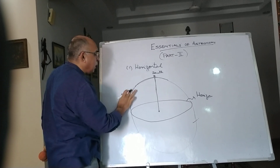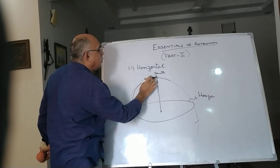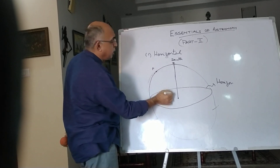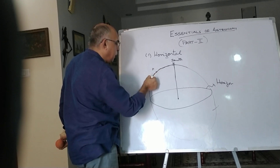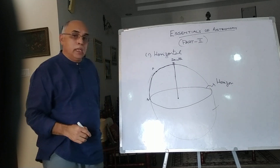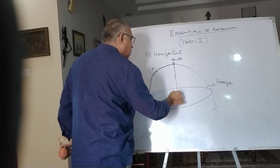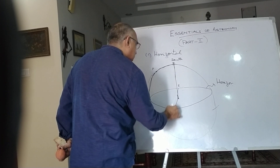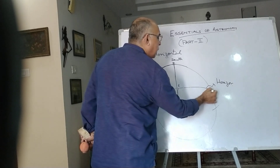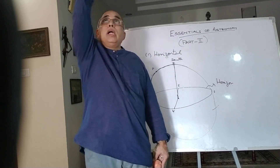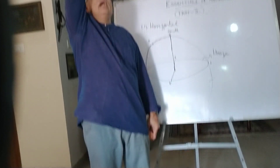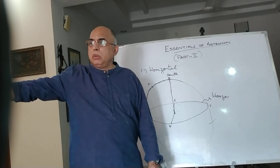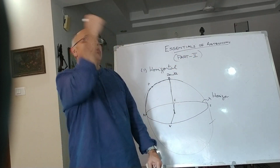The second important point we require is the pole star P. Depending on what location you are at, you draw a great circle going through the zenith Z and the pole star P, and the point where it meets the horizon is called the north point. If a person is standing looking north, 90 degrees on his right is east, 90 degrees on the left is west, and the point right behind is south.